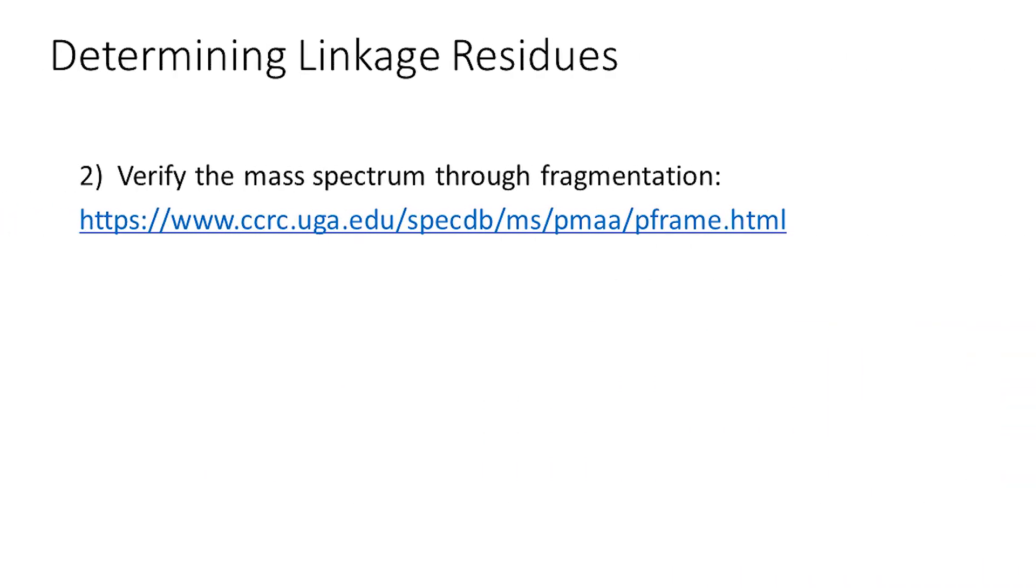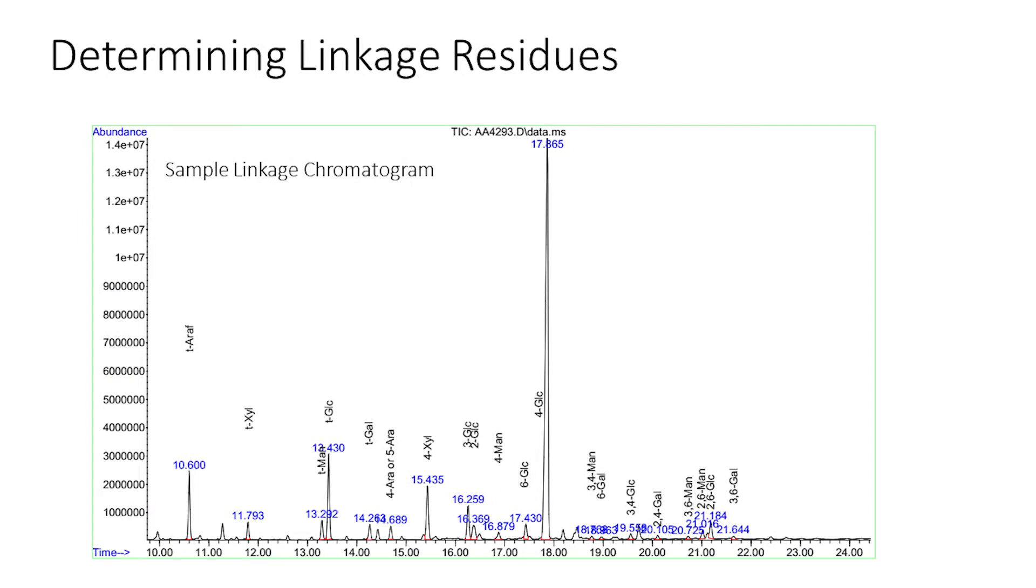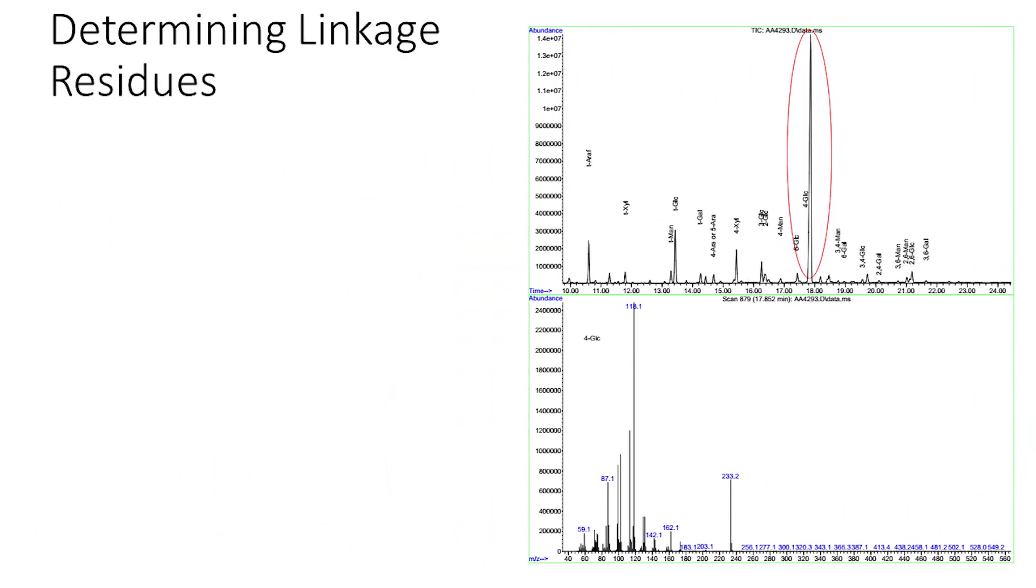The second step to identifying peaks is to verify the mass spectrum to confirm the identity of the PMAA residue. Going to our sample GC linkage chromatogram example, we'll be looking to verify the identity of the peak at 17.865 minutes or our four-linked glucopyranosyl linkage residue. We have the mass spectrum for this peak shown with a major 118 and 233 mass-to-charge ratio values.